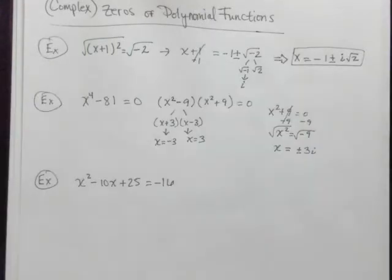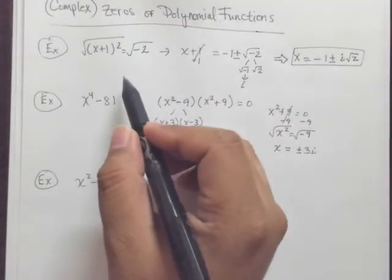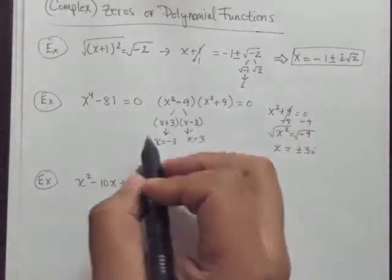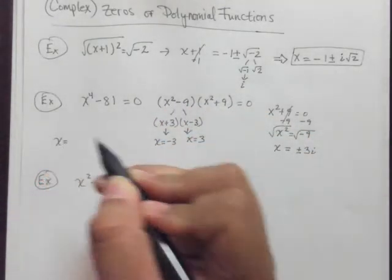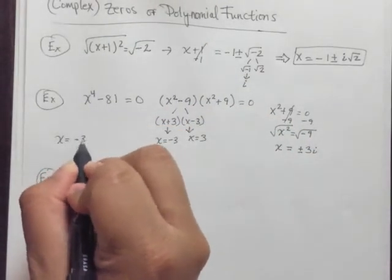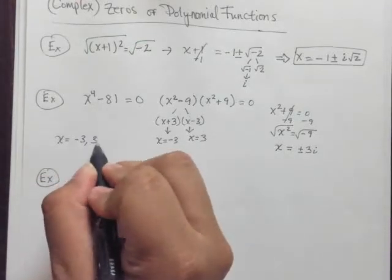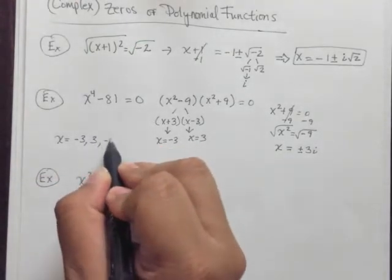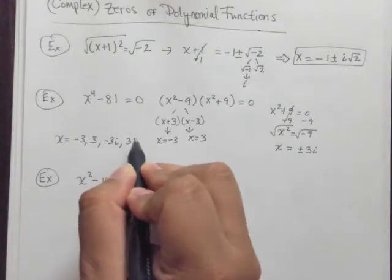x equals negative 3, and here x equals positive 3. So when we're asked for the zeros of this fourth degree polynomial, we can say, well, x equals negative 3, it equals positive 3, it equals negative 3i,